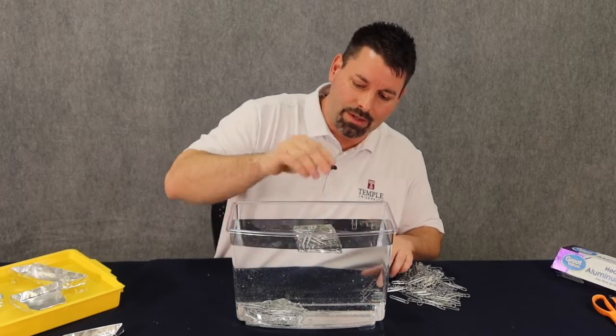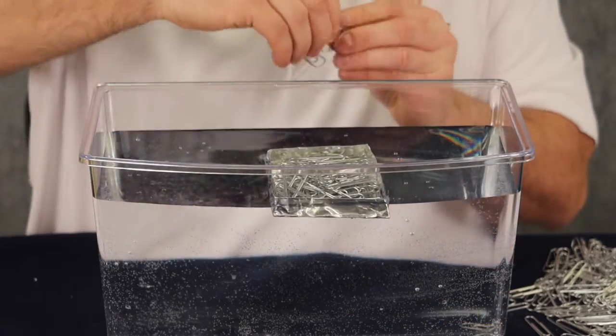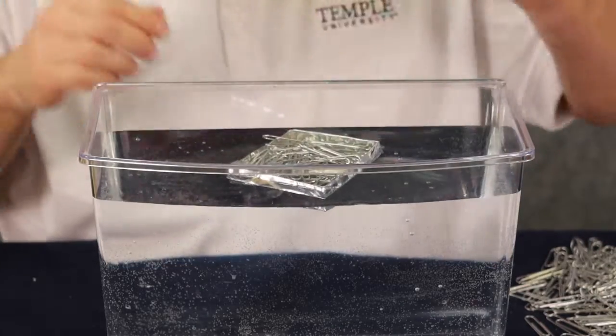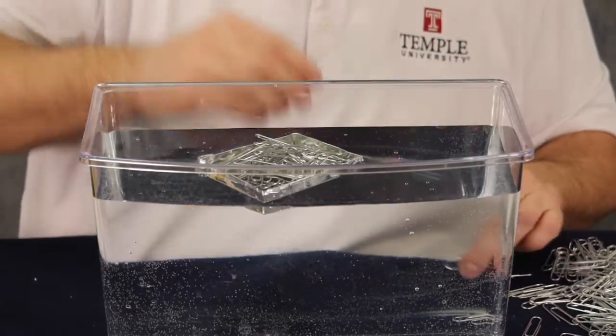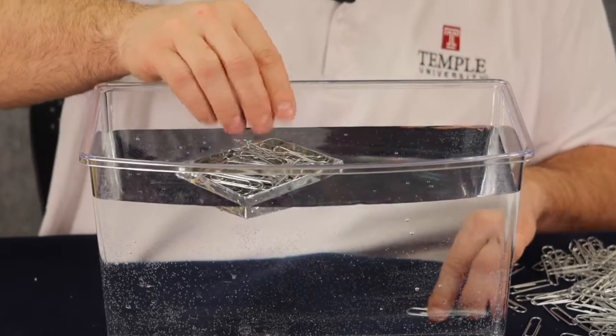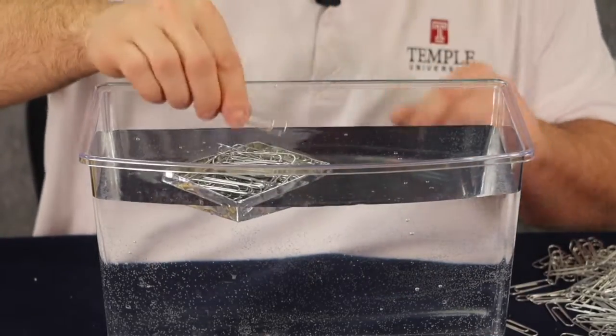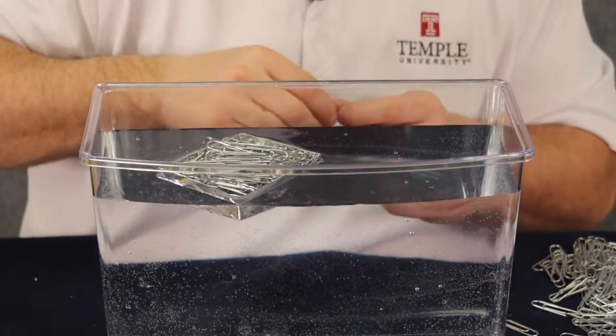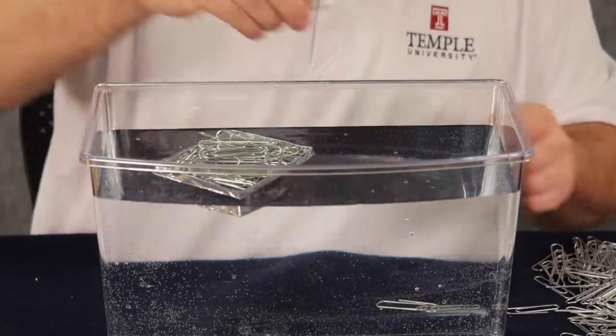The neat thing about this is you can start to see the boat sink lower into the water. You notice that the boat is tipping to one corner. I'm just going to add paper clips to the opposite corner to keep it balanced and level. Surprisingly this is holding a lot of paper clips. I think we have a pretty nice design for our boat. It's starting to sink lower into the water now.